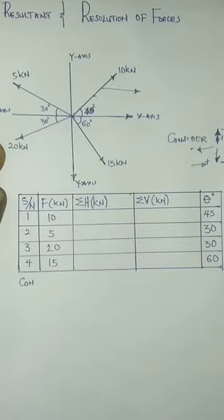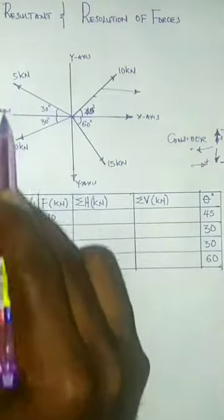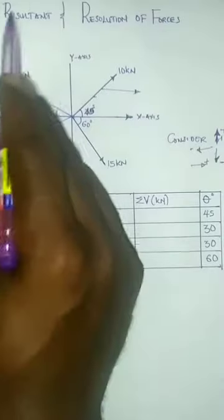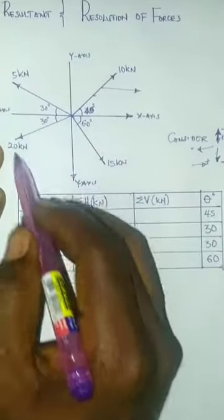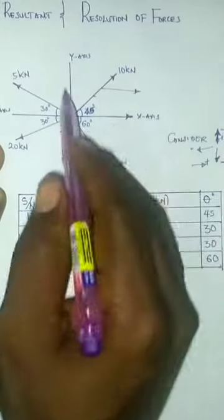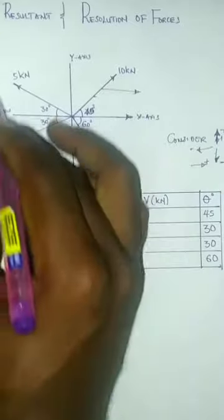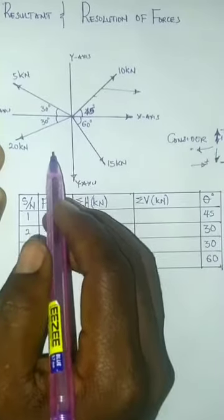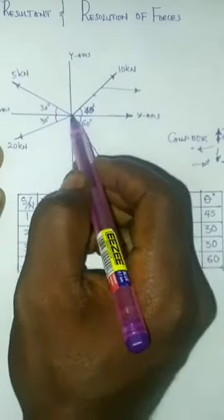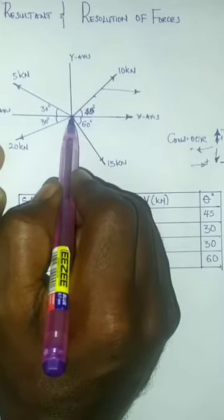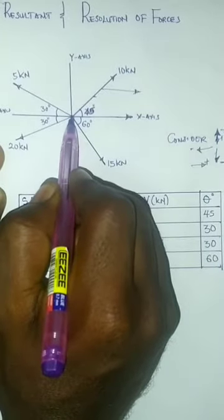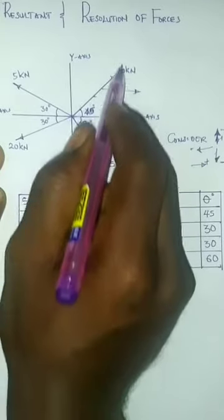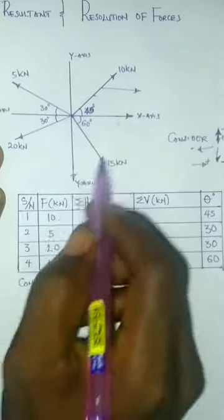Now, if you look at this, we have four forces attributed to this point. We call this kind of force a concurrent coplanar force. Coplanar force means they are forces on the same plane. Concurrent means they are passing through a common center, so their line of action meet at this point called the point of concurrence. But they are coplanar because they are on the same plane.